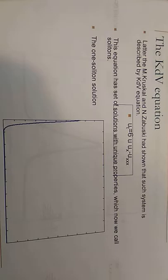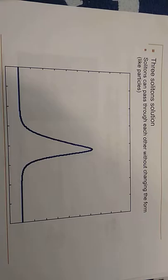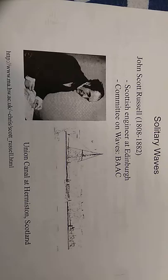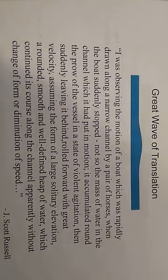The one-soliton solution is shown in the figure. Solitons can pass through each other without changing form like particles, as shown in figure. A soliton or solitary wave is a pulse that travels at constant speed. It was first observed by John Scott Russell in 1834.